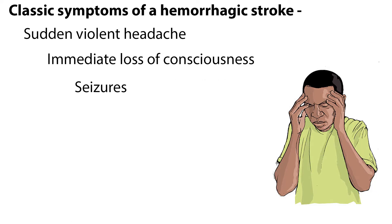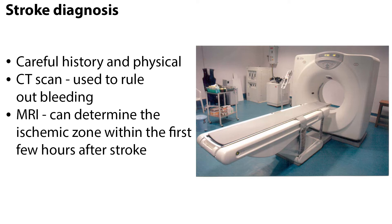The classic symptom of a hemorrhagic stroke is a sudden violent headache. Immediate loss of consciousness may occur from the sudden rise in intracranial pressure. Some patients also experience seizures. A stroke is initially diagnosed by means of a careful history and physical. It is necessary to differentiate between ischemic and hemorrhagic strokes by a CT scan or MRI. The CT scan is used to rule out bleeding, and the MRI can determine the ischemic zone within the first few hours of stroke. However, its high cost and limited accessibility usually make MRI the second option.